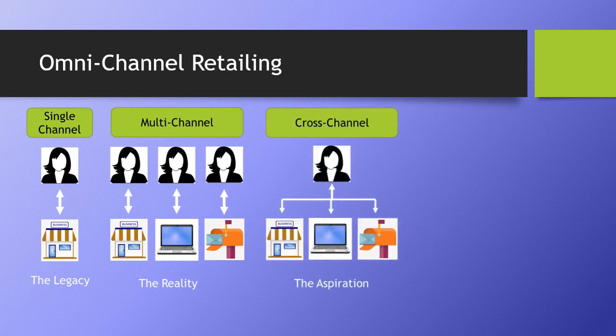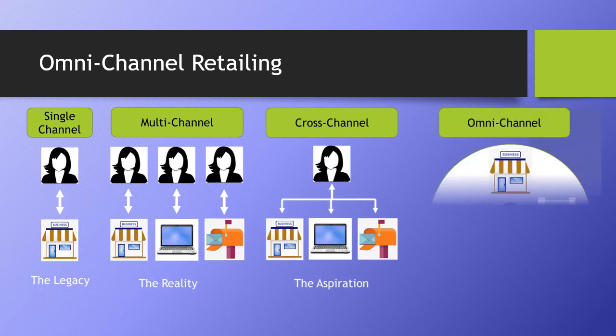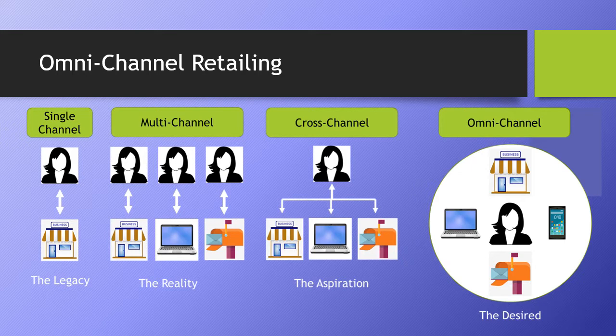In cross-channel, customers do see multiple touch points as part of the same brand — for example, a customer receives a mailer from a restaurant, looks at the menu online, then visits for lunch. But the retailer still has a single view of the customer and operates in functional silos. The goal is omni-channel: the customer experience is an overall brand, not a channel. Retailers leverage a single view of the customer in a coordinated and strategic way — all sales channels are integrated, providing a seamless experience no matter which device is used. A strategy is not truly omni-channel unless the channels are coordinated, integrated, and aimed at the same goal.